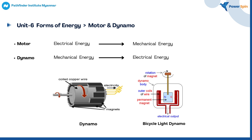Here in the first picture, the normal dynamo, we can see that from the rotation, we can get electricity. Same goes for the second picture, the bicycle light dynamo.